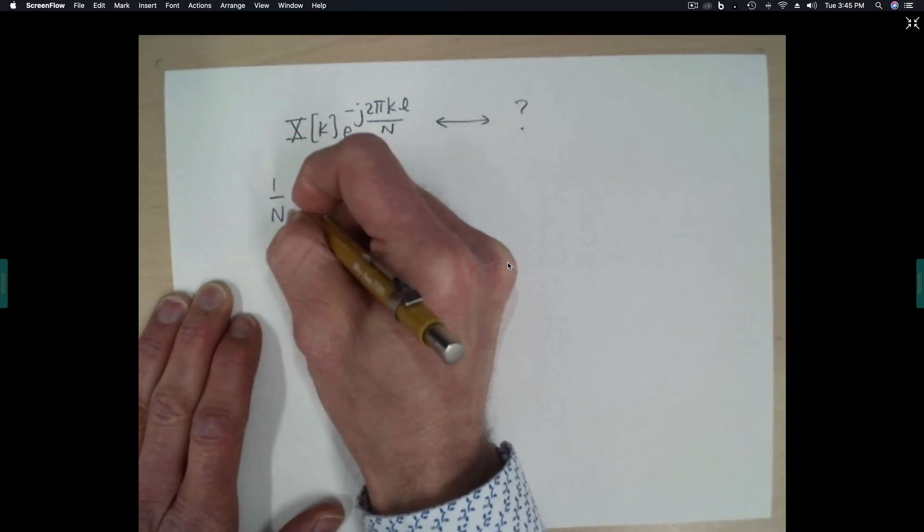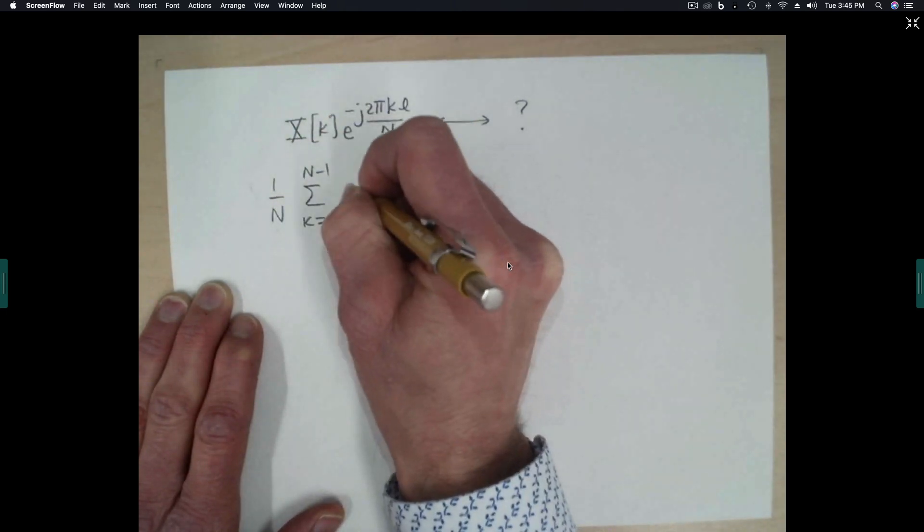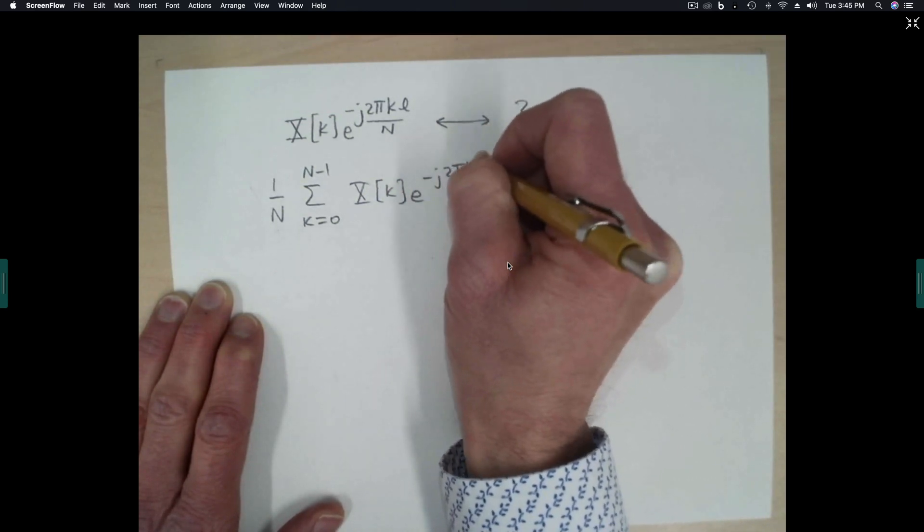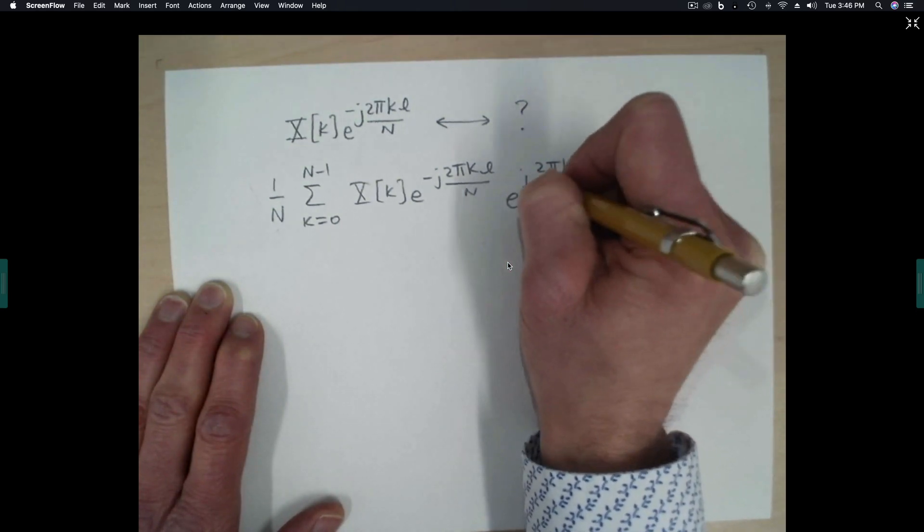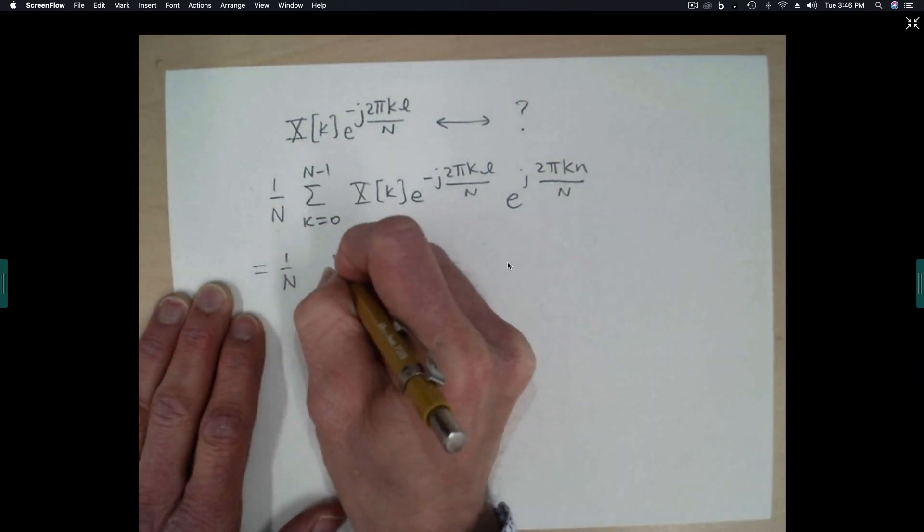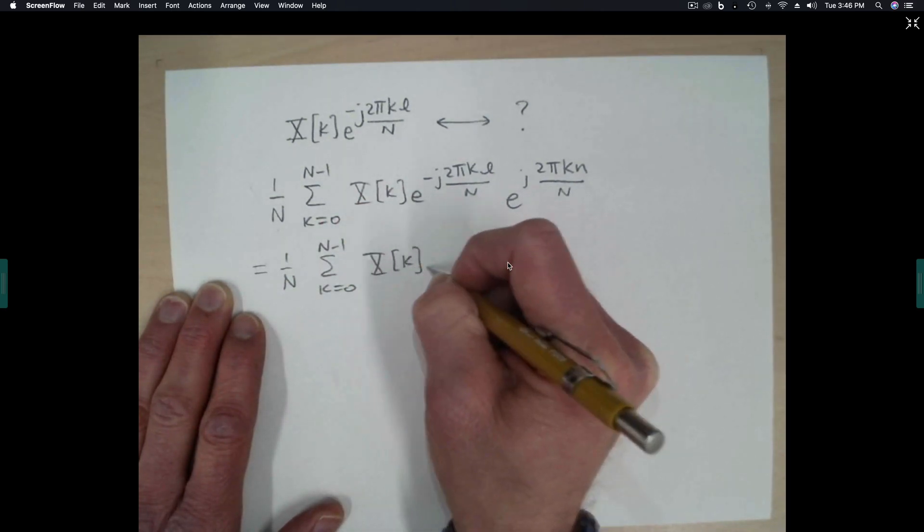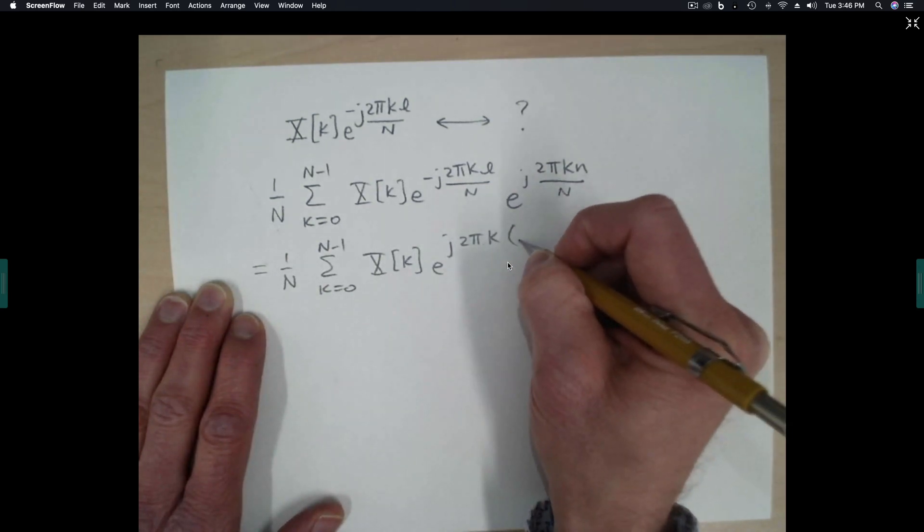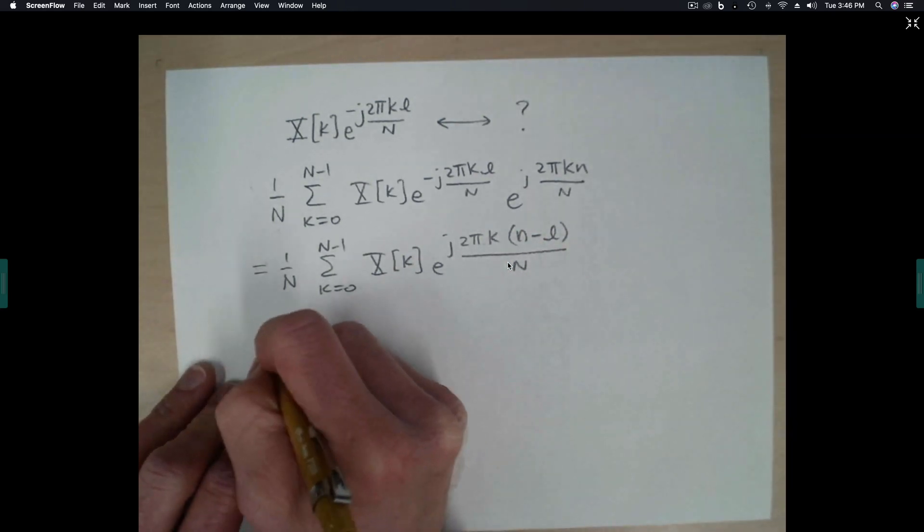So we'll write down the inverse DTFT formula. k going from 0 to n minus 1, xk, e to the minus j, 2 pi, k, l, over n, e to the j, 2 pi, k, n, over capital N. So if we combine the complex exponentials, we have e to the j, 2 pi, k, n minus l, all of that divided by n, which is equal to...